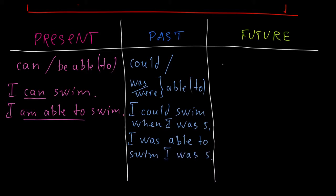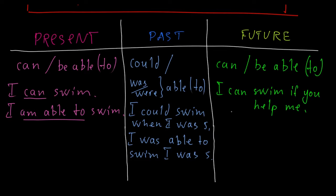What about future? Here, I use can or be able to. As you see, present and future are quite similar. For example, I can swim if you help me. That's future condition. It refers to the future. Or, I will be able. Pay attention. Here, we have the auxiliary verb will. I will be able to swim. Soon. Perhaps now, I'm just taking some lessons. But, I will be able to swim in the future.